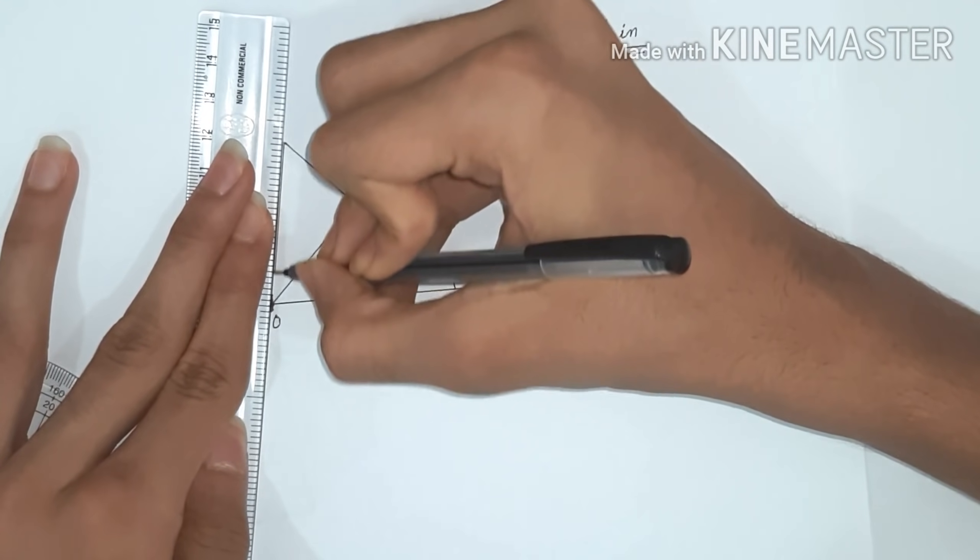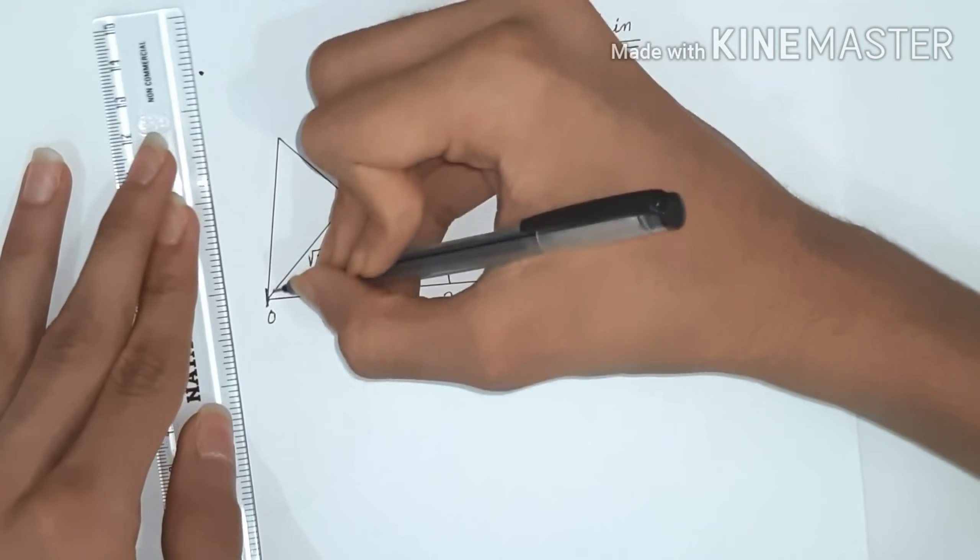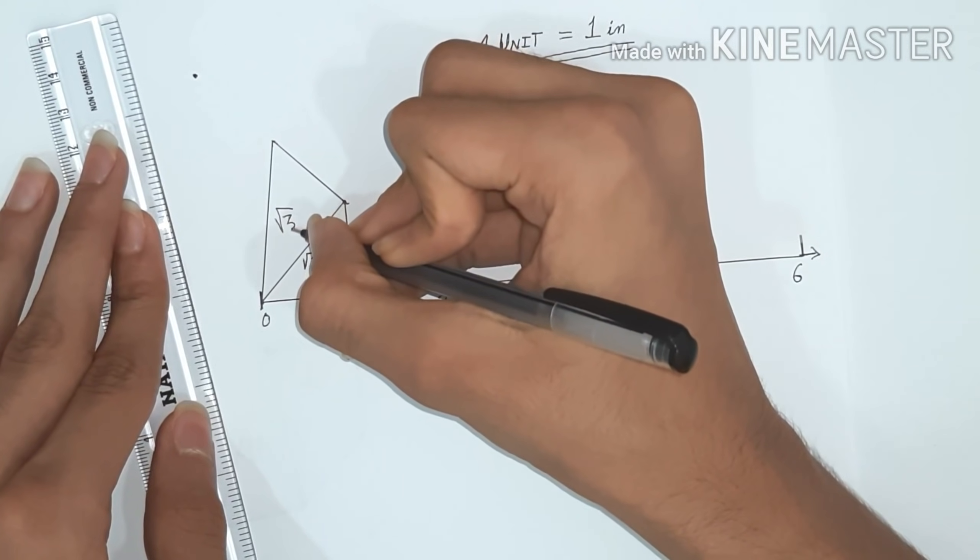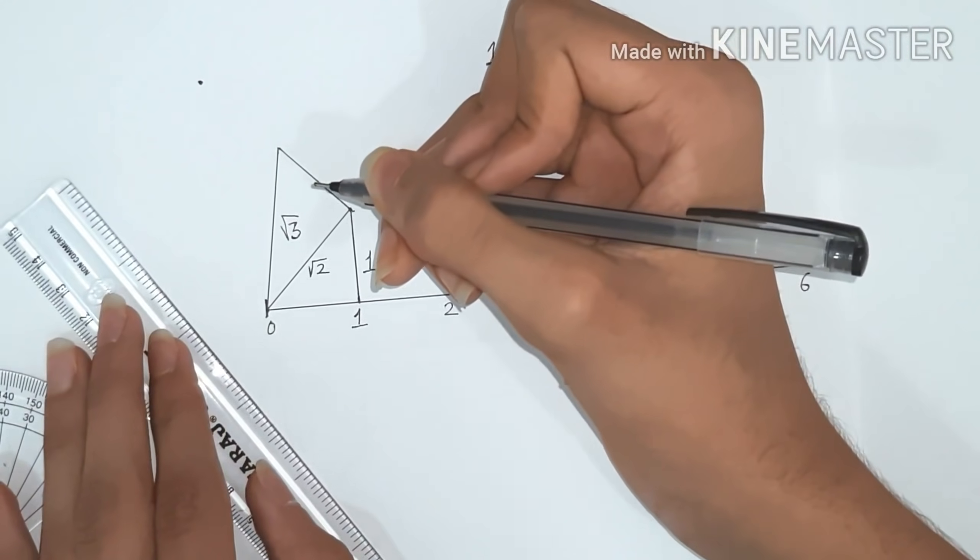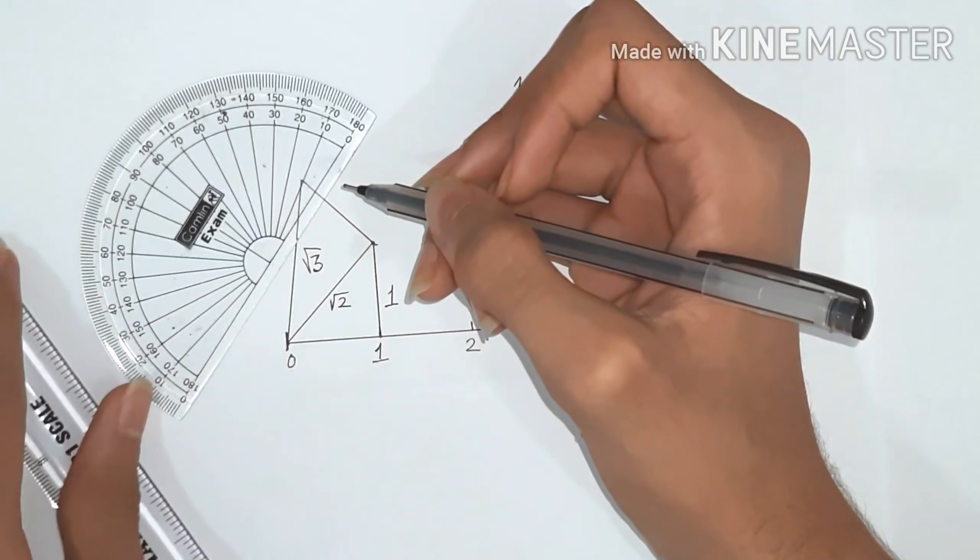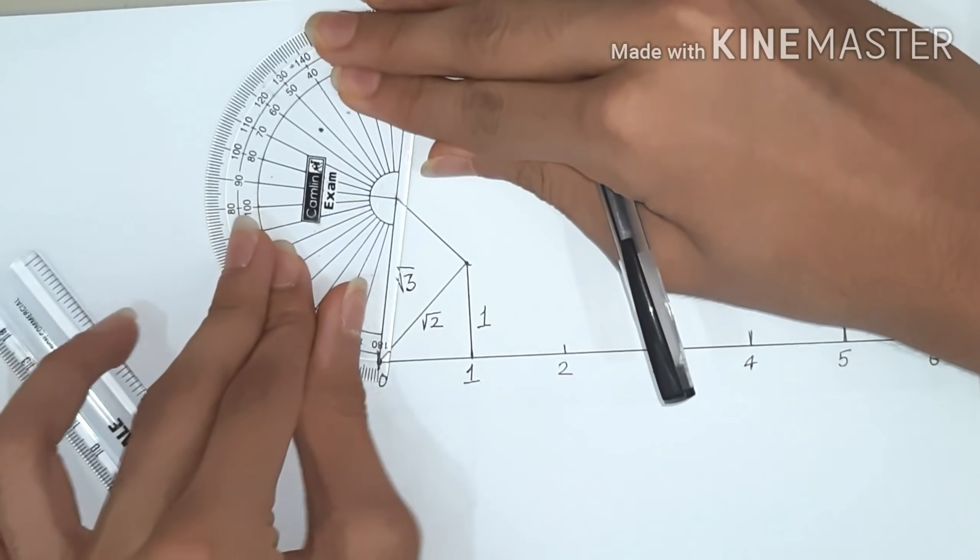After that, we can continue this process to get square root 4 and so on. This only works when we have a right angle triangle. That's why we need to take 90 degrees. Now let's create square root 4.